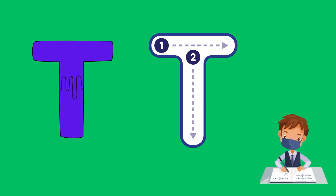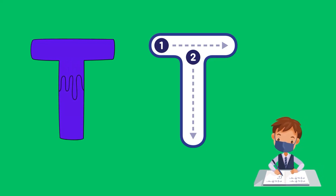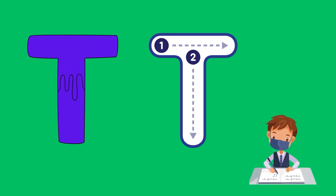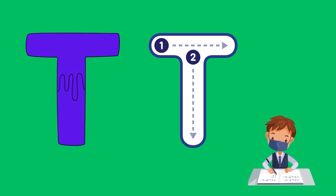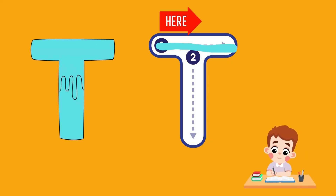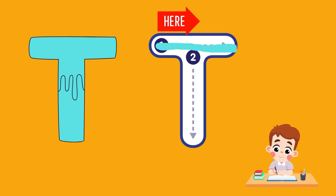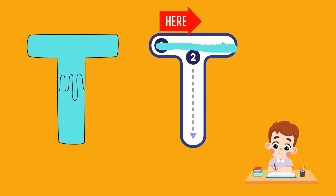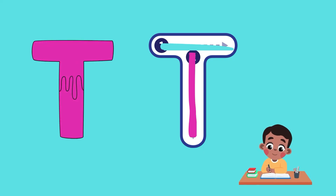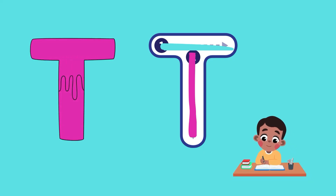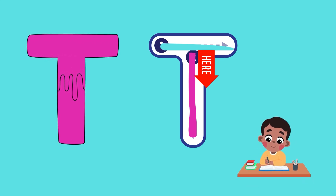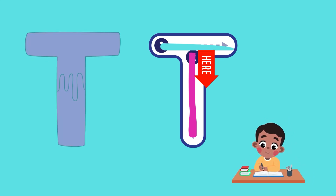Dear kids, as you know, T is for turtle. Now let's start to write alphabet T. In alphabet T there are two steps. Step number one: start from point one and draw a line towards the right. Now step number two: start from point two, locate it on the mid of line one, and draw a line downwards. This is step number two for you.